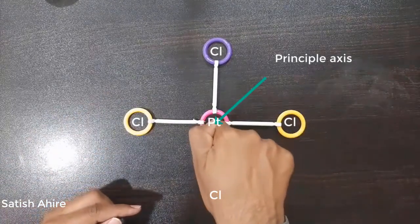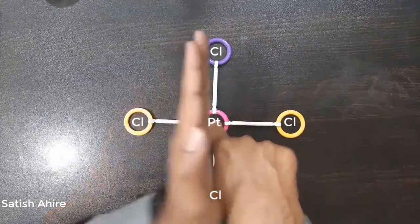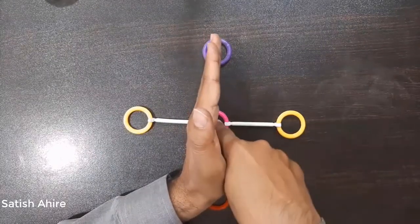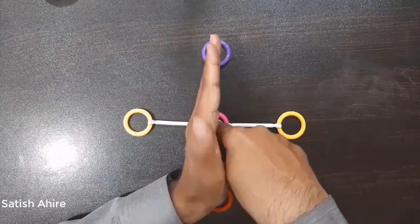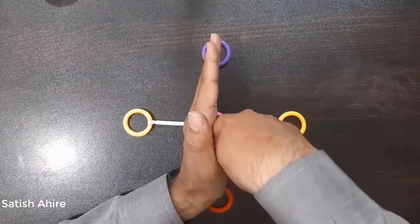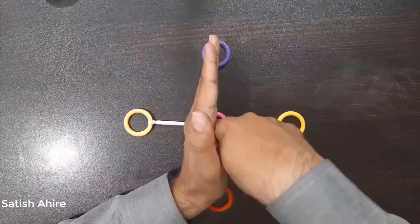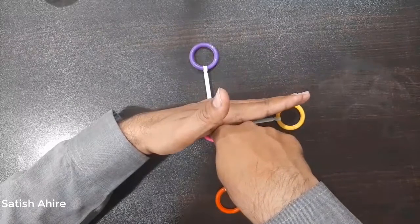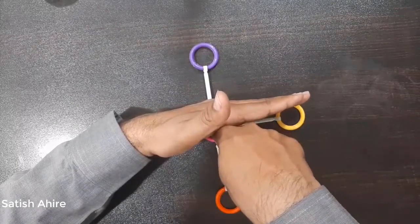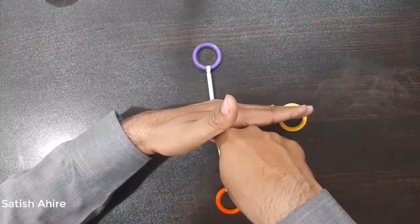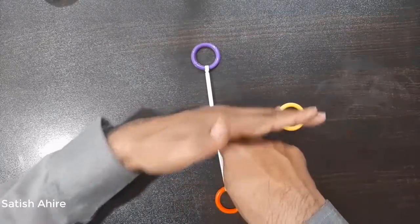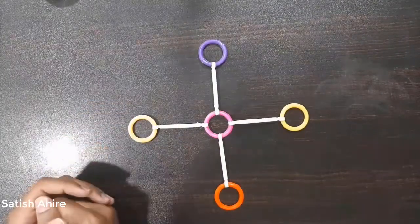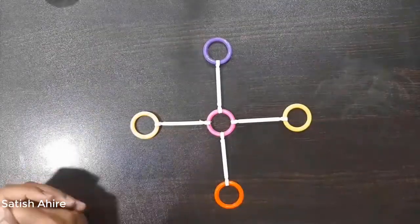In this case, C4 is the principal axis that passes through the central atom. If I pass a plane through these atoms, it divides the molecule into two equal parts that are mirror images of each other, and this plane is parallel to the principal axis, therefore it is a vertical plane of symmetry. Similarly, this second plane is also parallel to the principal axis and divides the molecule into two equal parts. Therefore this molecule contains two vertical planes of symmetry. Thank you.